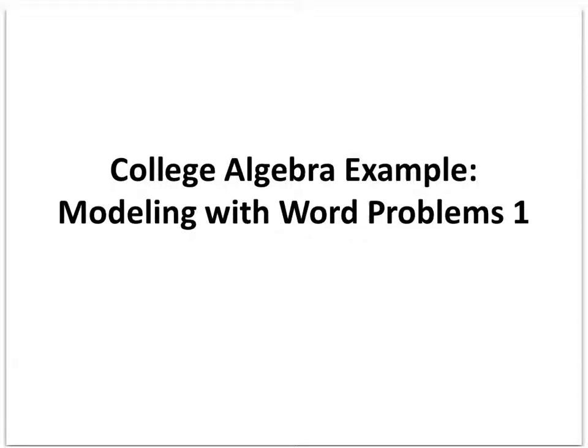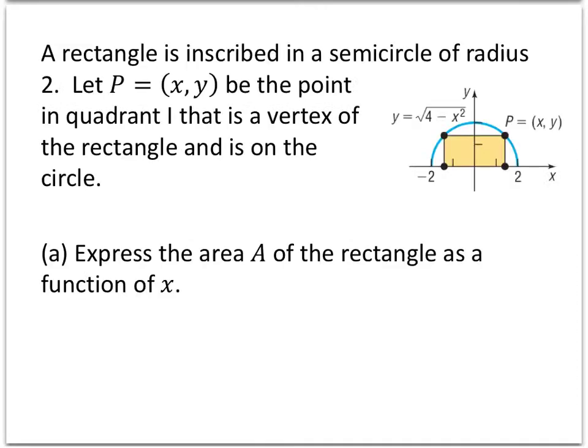In this video, we'll use mathematical modeling to solve a word problem. So here's a typical example. A rectangle is inscribed in a semicircle of radius 2. Let P be (x,y), the point in quadrant 1 that is a vertex of the rectangle and is on the circle.